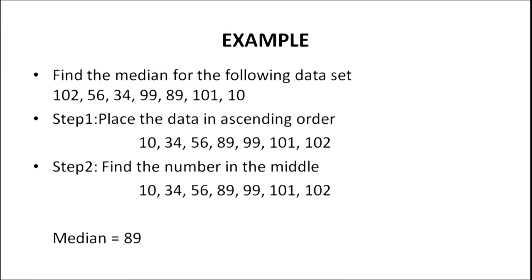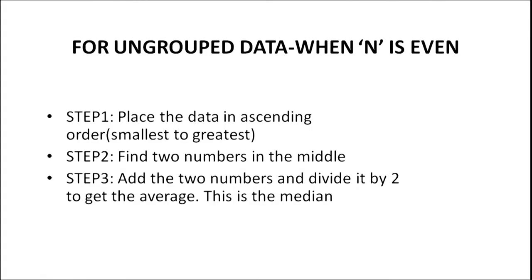Another example: find the median for the data set 102, 56, 34, 99, 89, 101 and 10. Step 1: place the data in ascending order — 10, 34, 56, 89, 99, 101 and 102. Step 2: find the number which comes in the middle position. We can see that 89 is the number in the middle position. Thus, median is equal to 89.